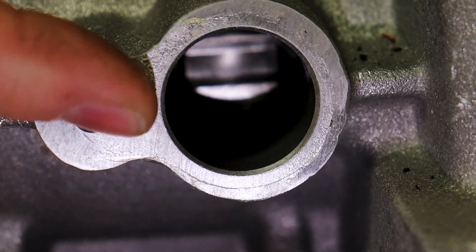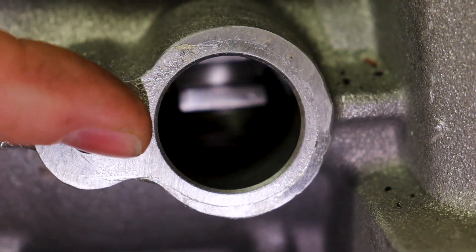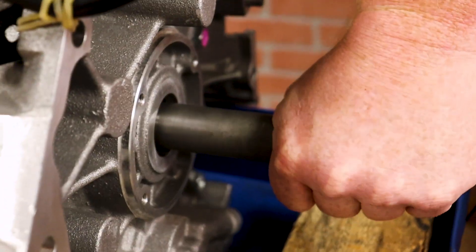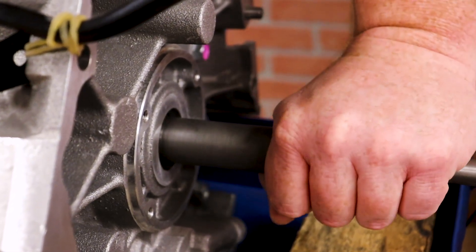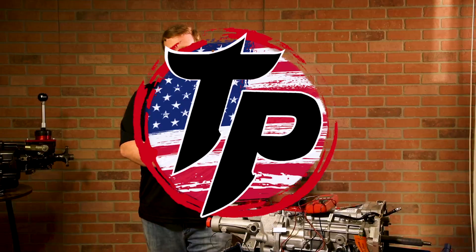So the easiest way to do that is while the sensor is still out, you can look in the hole, mark one of the teeth, turn it, and just continue to count until you get back to your mark. That way, you know what you're working with, because you're going to have to have that information in order to set it up in your computer later.